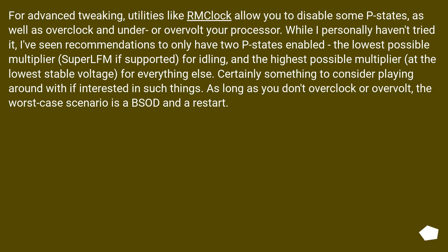For advanced tweaking, utilities like MacLock allow you to disable some P states, as well as overclock and under- or over-volt your processor. I've seen recommendations to only have two P states enabled: the lowest possible multiplier (super low frequency mode if supported) for idling, and the highest possible multiplier at the lowest table voltage for everything else. As long as you don't overclock or over-volt, the worst case scenario is a blue screen and a restart.